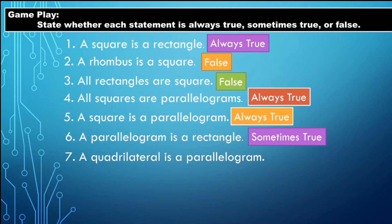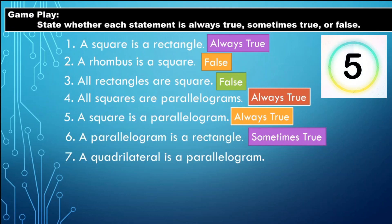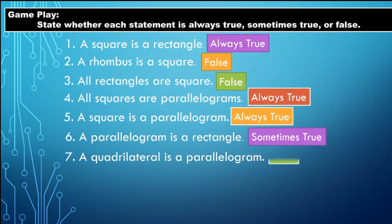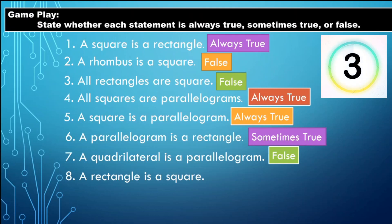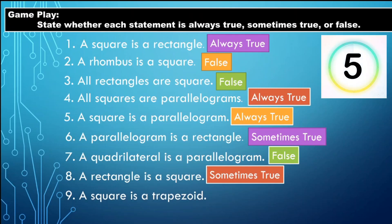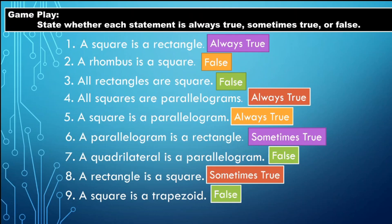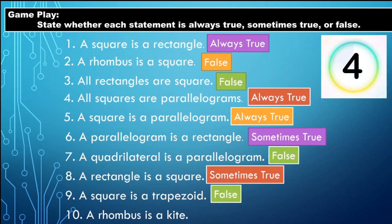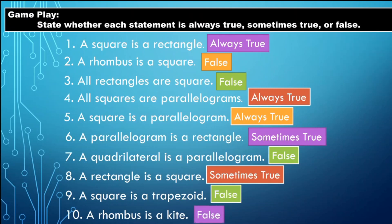Number seven: A quadrilateral is a parallelogram — the correct answer is false. Number eight: A rectangle is a square — the correct answer is sometimes true. Number nine: A square is a trapezoid — the correct answer is false; a square is not a trapezoid. Number ten: A rhombus is a kite — the correct answer is false.